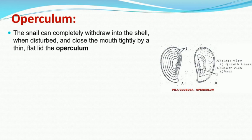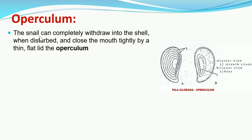Now we come to the operculum. The operculum is a lid-like structure present at the peristome — the opening of the mouth. Whenever the snail senses danger, it can take its body inside the shell and cover the shell with the help of this operculum. So it can withdraw its body inside the shell when disturbed and close the mouth tightly by this thin flat lid-like structure.